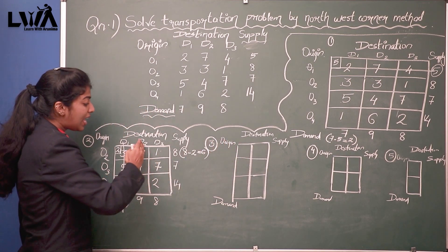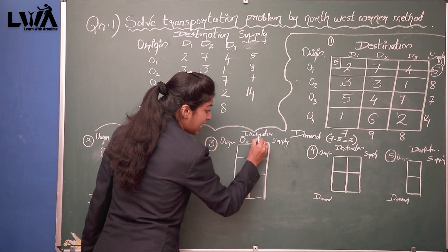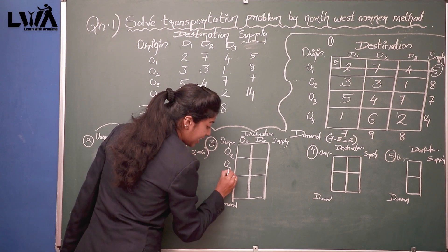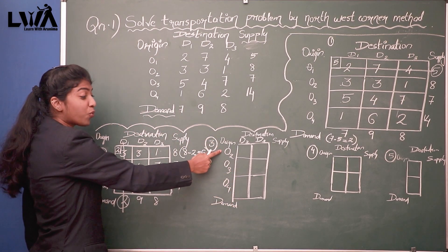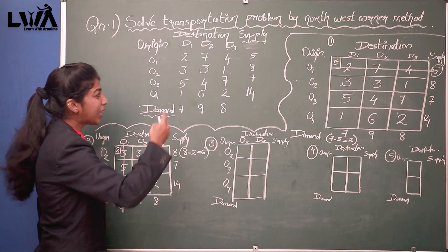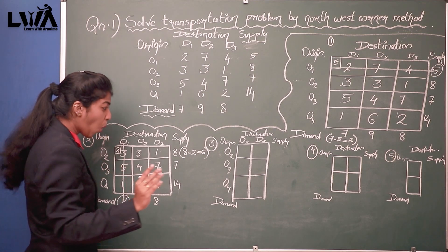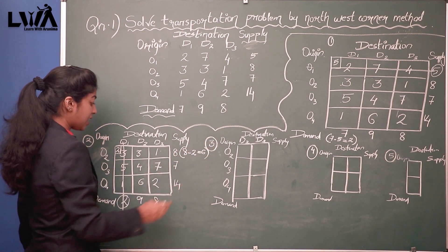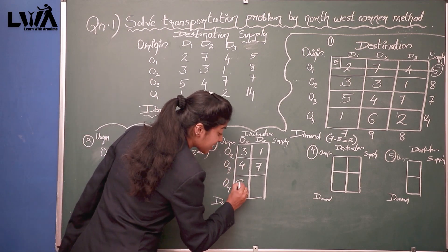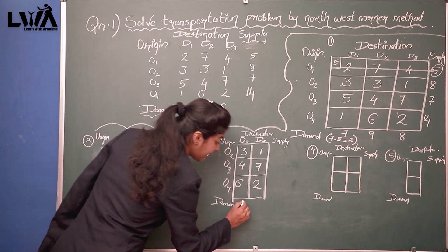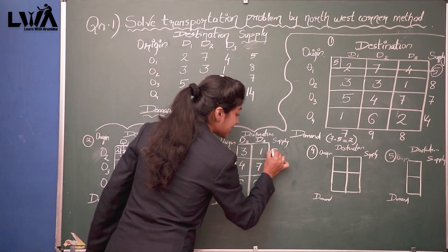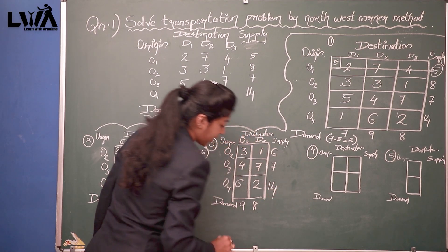D1 is exhausted, so the remaining matrix has D2 and D3 with O2, O3, O4. Be very cautious — don't write O1 O2 O3 when you're writing fast in the exam; this part is majorly missed and the entire problem will collapse. Rewrite: 3 1; 4 7; 6 2. Now the values are 9 and 8, with D1 updated to 8 minus 2 equals 6. So 6, 7, 14.